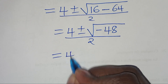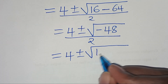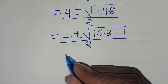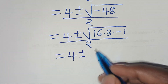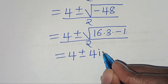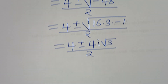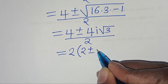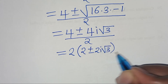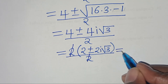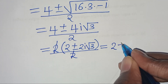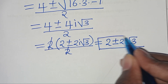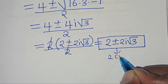This gives (4 ± 4i√3) / 2. Factoring out 2 from the numerator: 2(2 ± 2i√3) / 2, which simplifies to 2 ± 2i√3. So x₂ and x₃ equal 2 ± 2i√3 — these are two complex solutions.